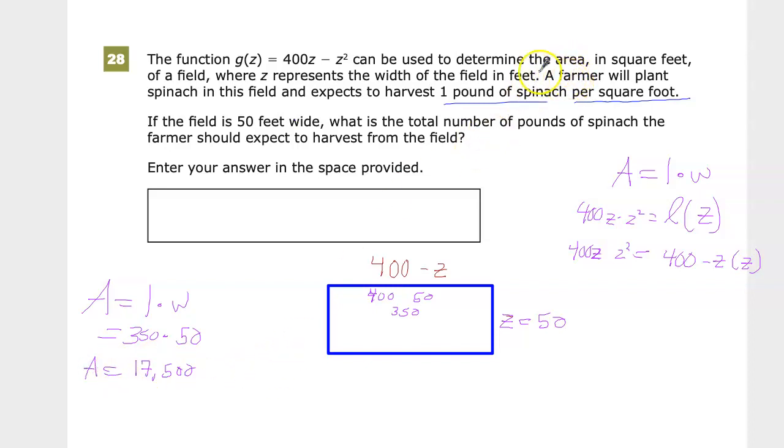But the question tells us that one pound of spinach per one square foot, and since they want to know what are the total number of pounds, it's the same as the number of square feet. So my answer is 17,500.